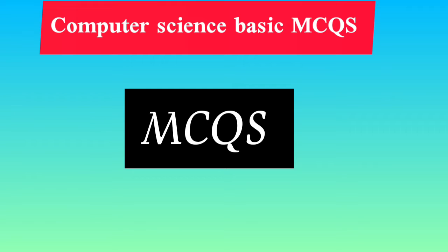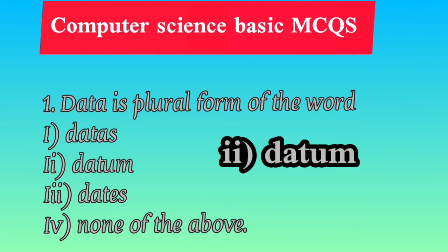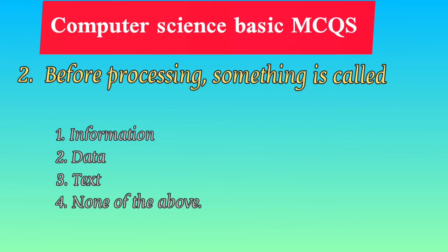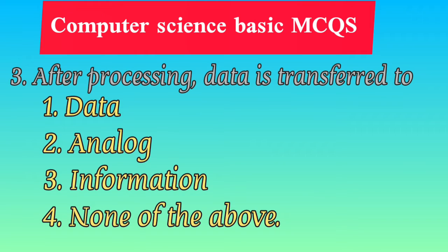Bismillah. Assalamu alaikum. Computer Science basic MCQs. 'Data' is the plural form of which word? Options: datas, datum, dates, none of the above. The correct answer is datum. Before processing, something is called: information, data, text, none of the above. Correct answer is data. After processing, data is transferred to: data, analog, information, none of the above. The correct answer is information.